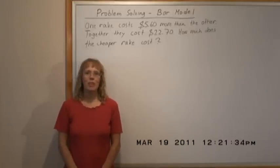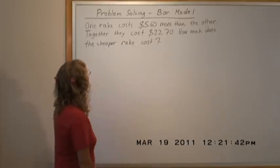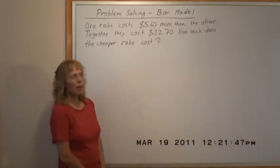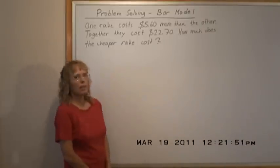Hello, my name is Maria Miller from MathMammoth.com. In this video I will solve one word problem using the bar model. One rake costs $5.60 more than the other and together they cost $22.70. How much does the cheaper rake cost?